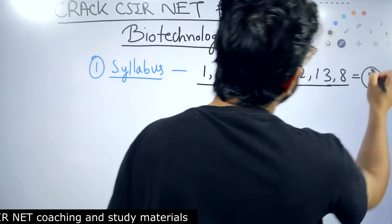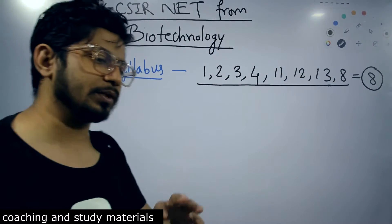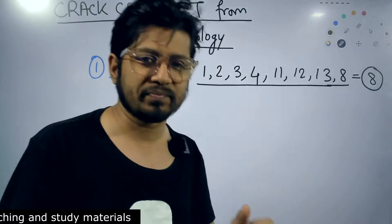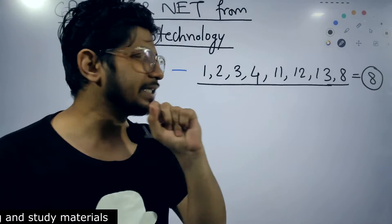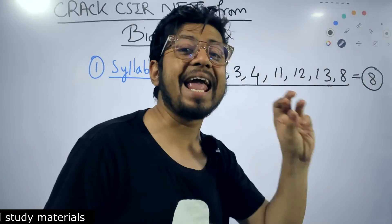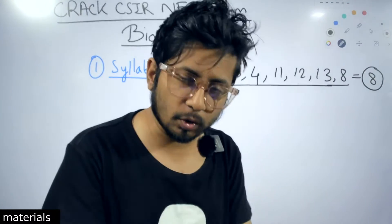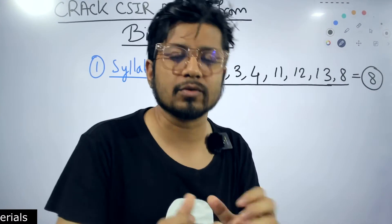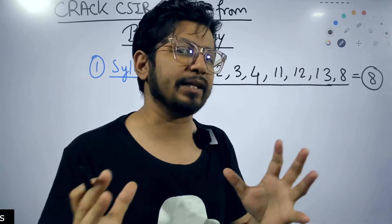So, even if someone decides that I'll only prepare the units which are in my zone from a biotechnology background, 8 topics, 8 units are out there that is from your zone from biotechnology background students out of 13 that you can prepare.